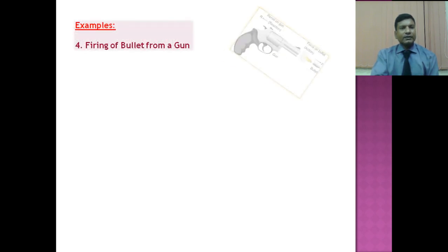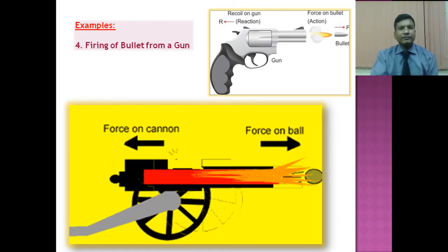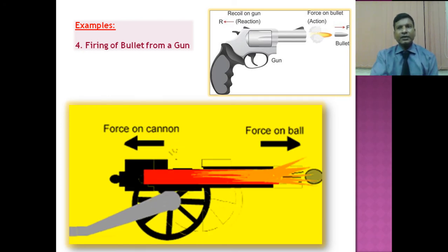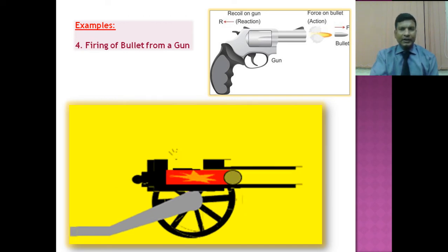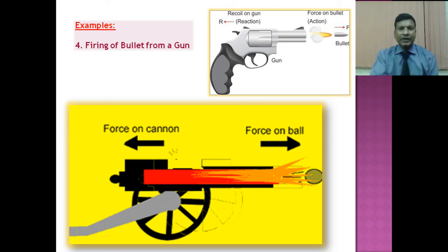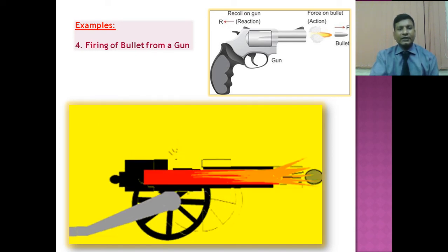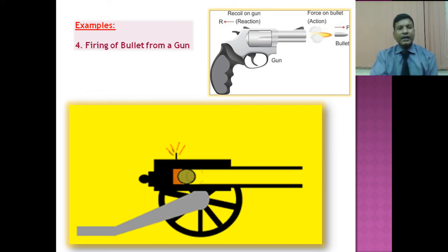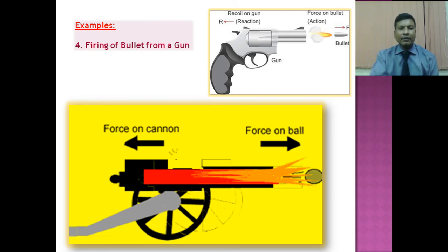The next example is the firing of a bullet from a gun. When a bullet is fired from the gun, the force on the bullet by the gun becomes action, and the same amount of force exerted by the bullet on the gun becomes reaction. Due to the reaction, the gun recoils back. See the animated diagram: the force applied by the cannon on the ball is the action, and at the same time the ball exerts a force on the cannon in the backward direction, due to which the cannon moves back.